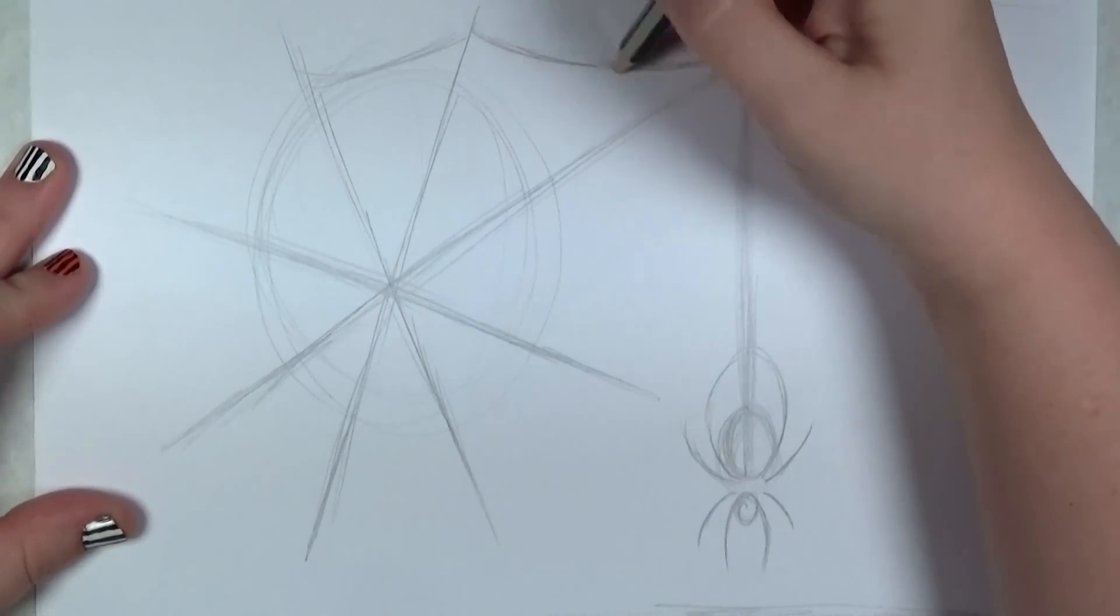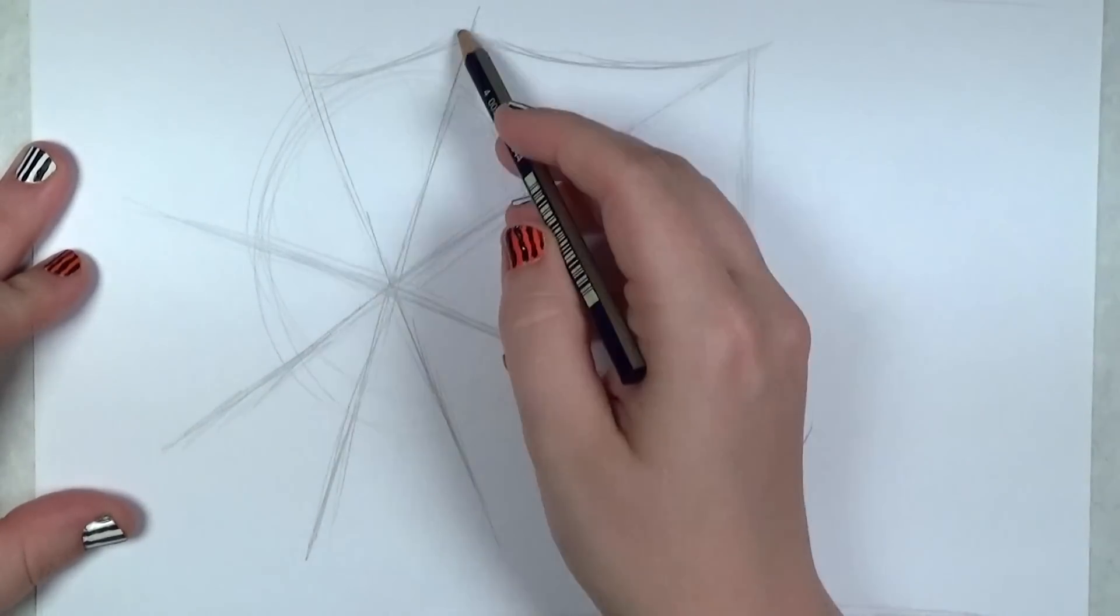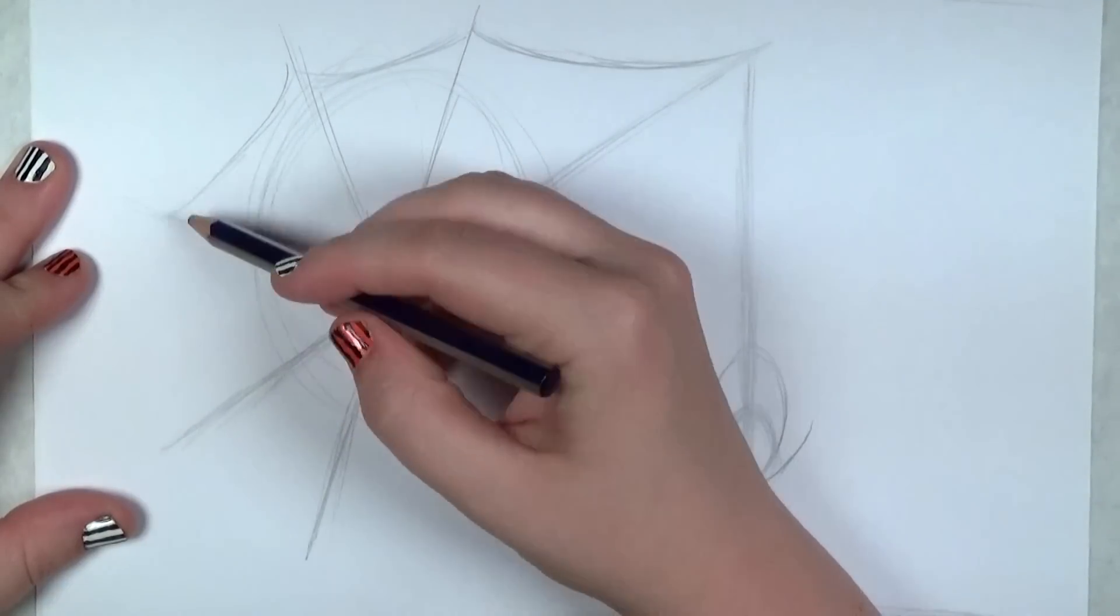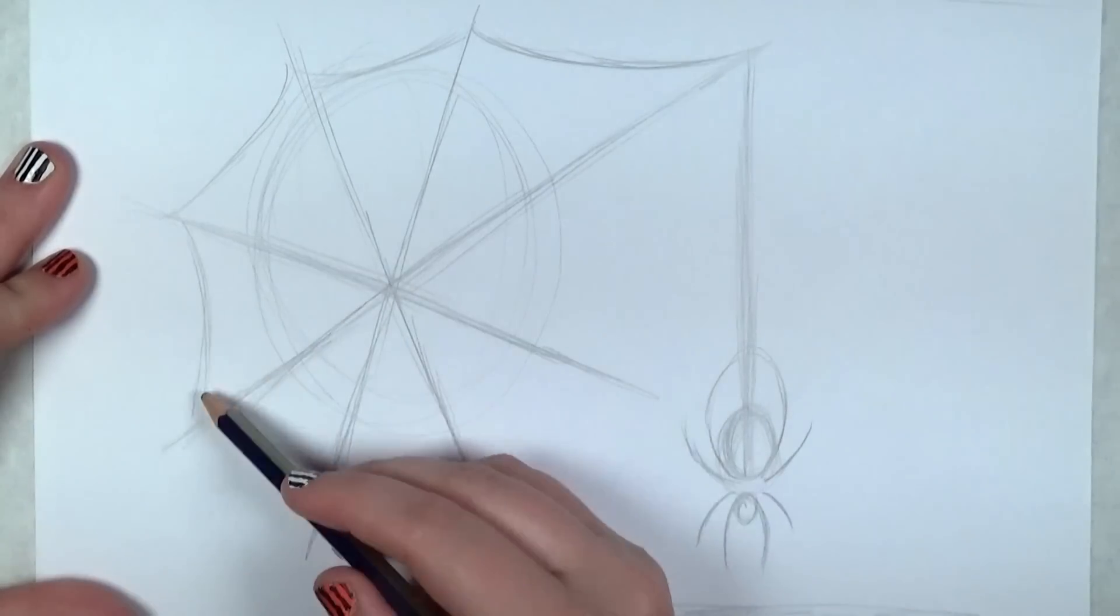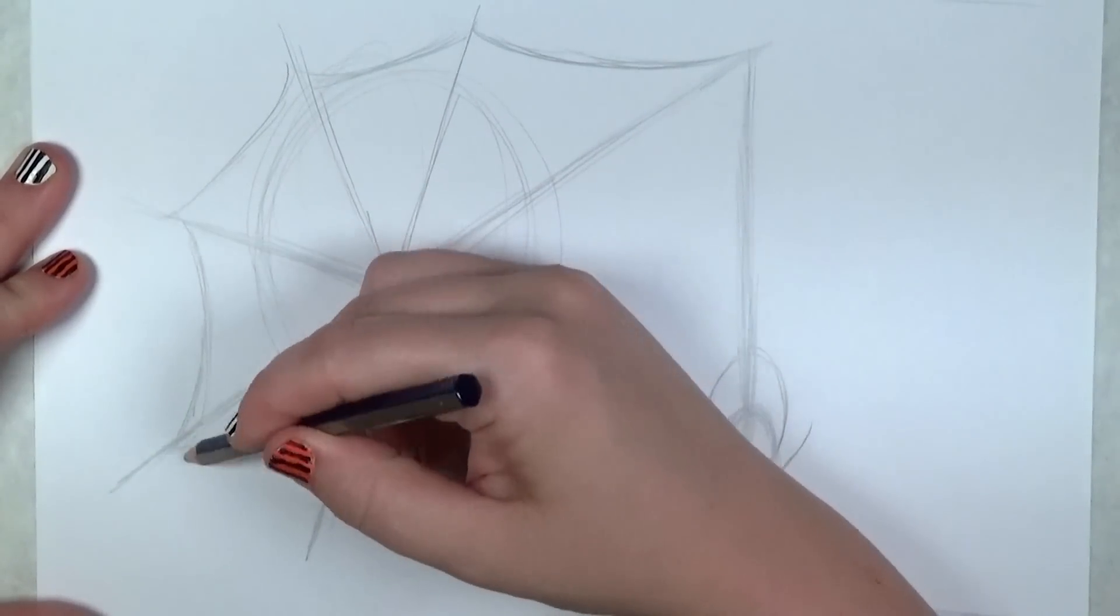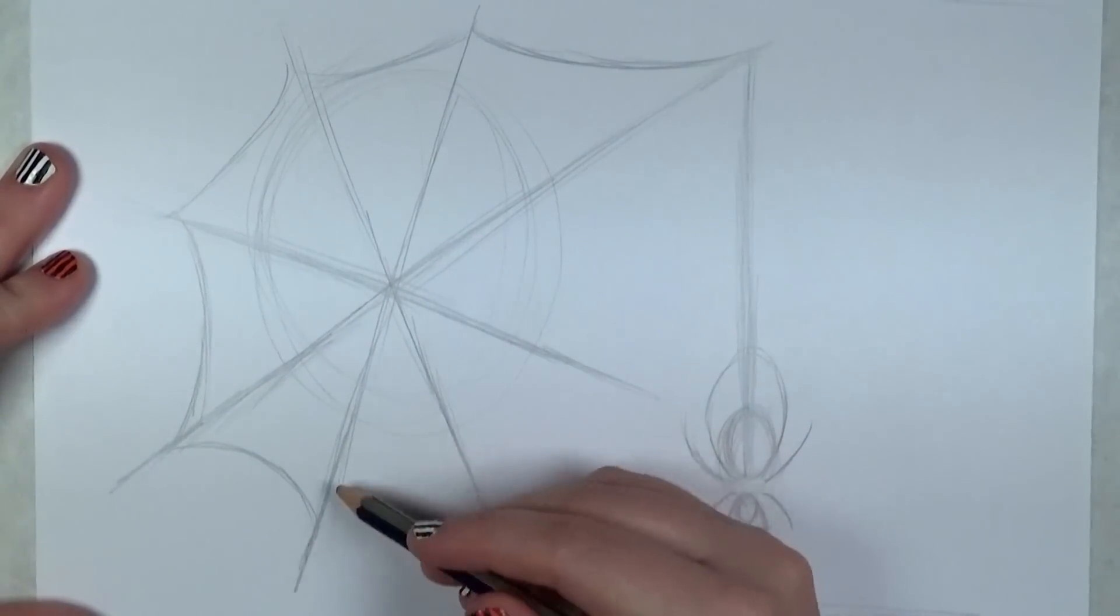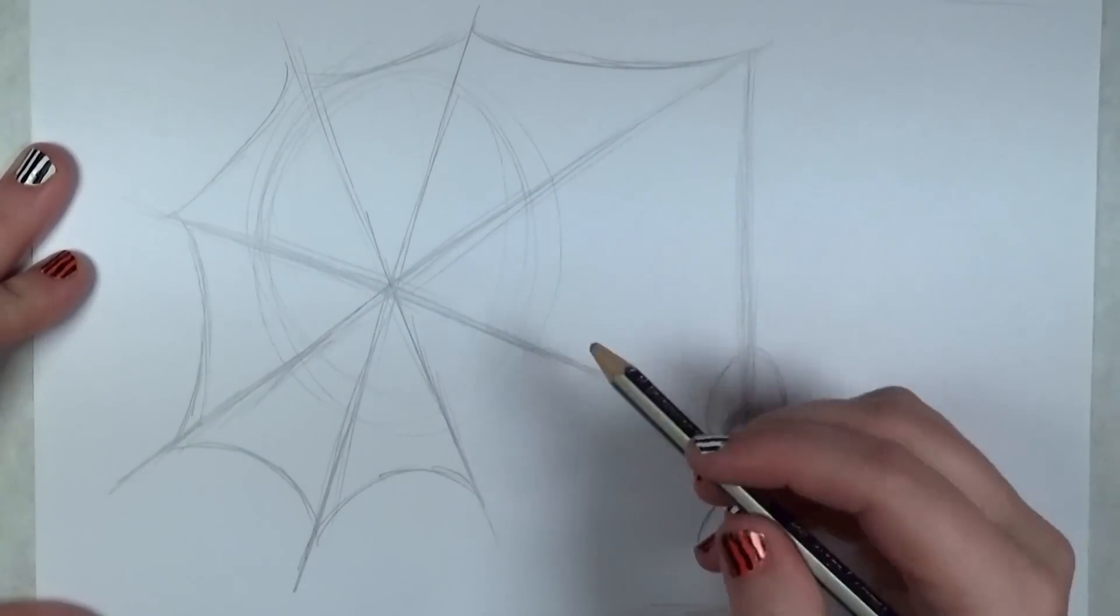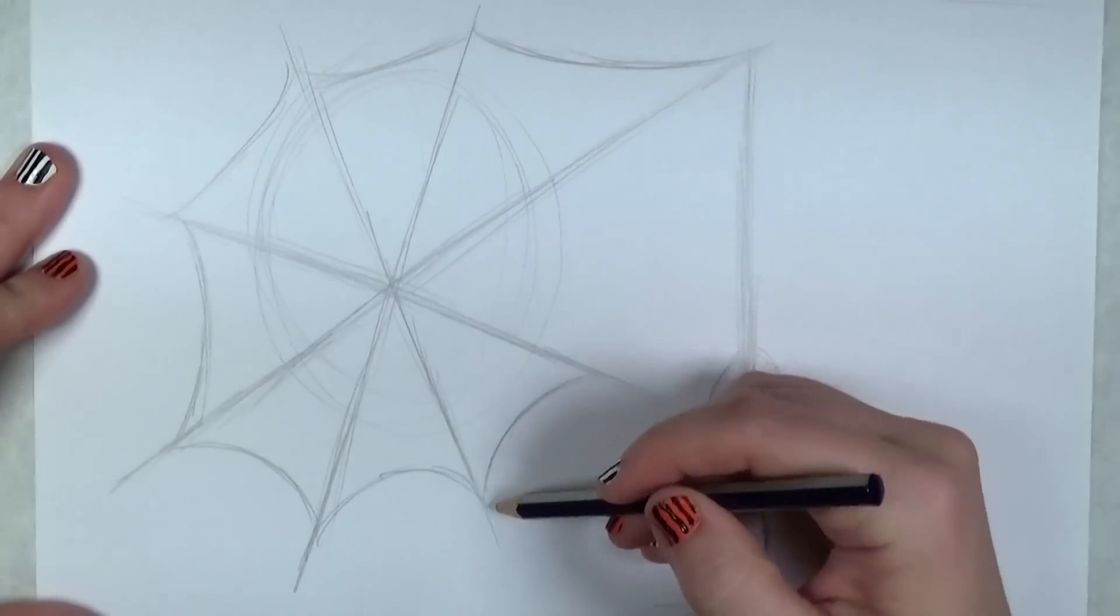So now is the fun part of doing the web, going around. Initially when I was drawing this I tried to draw from the middle and work outward, and I found that didn't quite work.